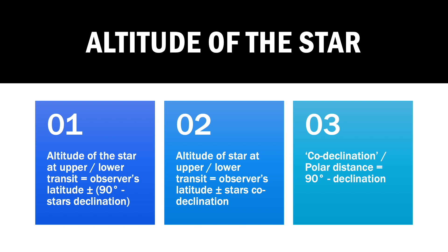Looking at how to calculate the altitude of a star: the altitude of a star at upper or lower transit can be calculated by the observer's latitude plus or minus 90 minus the star's declination. The plus is used at upper transit and the minus is used for lower transit. Another way this formula can be written is: altitude equals observer's latitude plus or minus the star's co-declination, where co-declination or polar distance equals 90 minus declination.